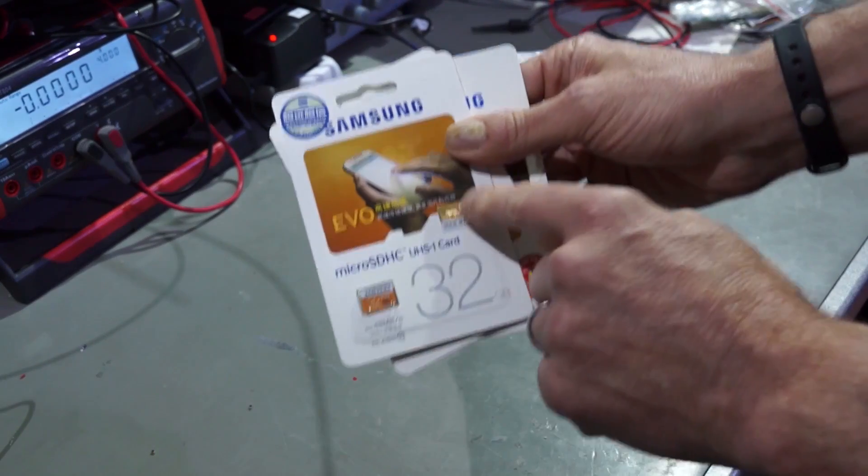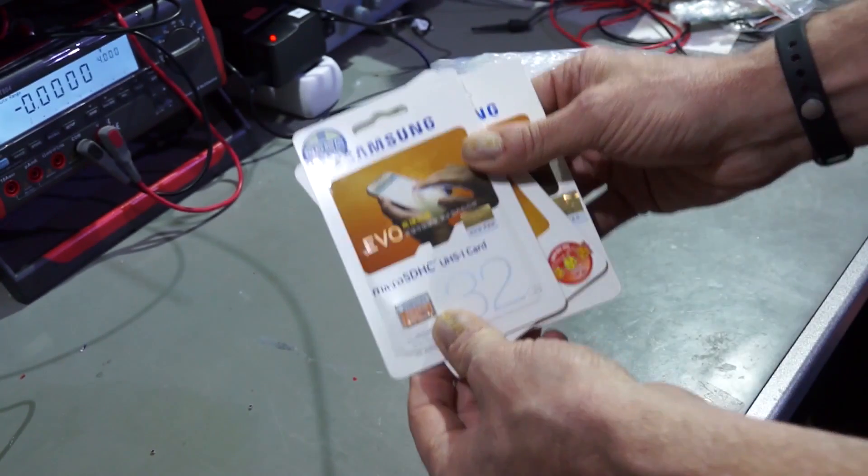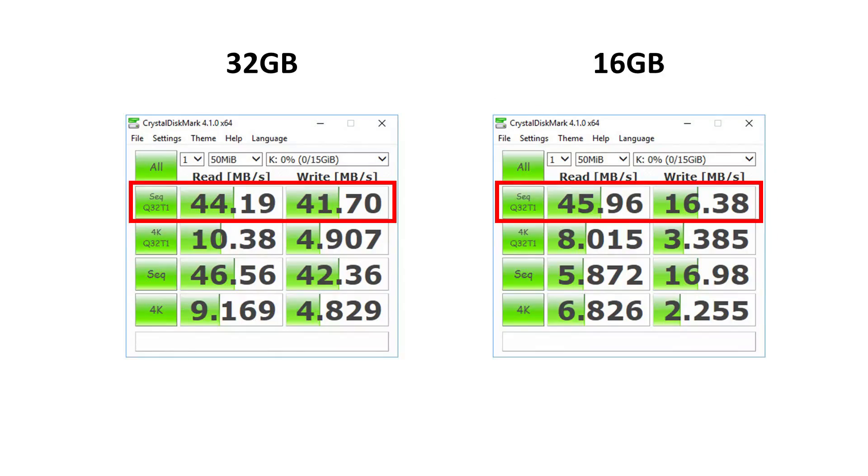They seem to be from Samsung because there is a holographic sign on it. The package says 48 megabytes per second throughput. My tests show that the read throughput is not much overstated. So these SD cards are okay for me.